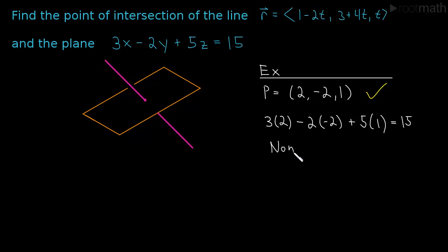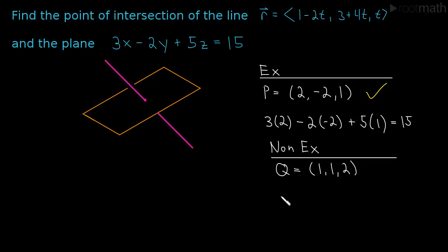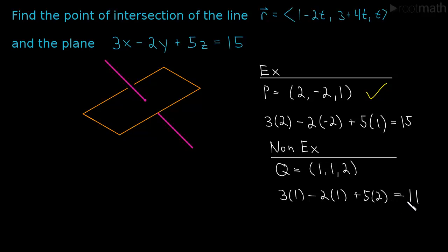Here is a non-example. The point Q = (1, 1, 2) is not a point in the plane. When I plug that in, I get 3 times 1, minus 2 times 1, plus 5 times 2. This simplifies to 11, which is not 15. So this is not a point in the plane.